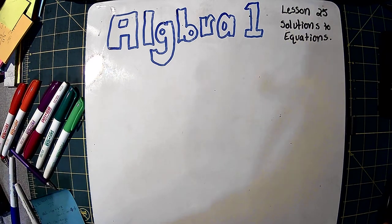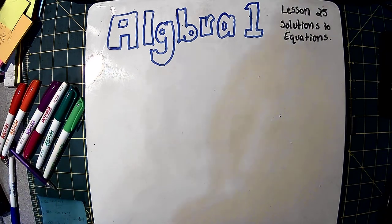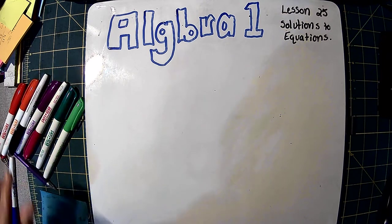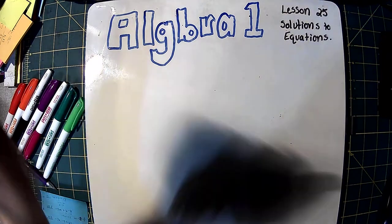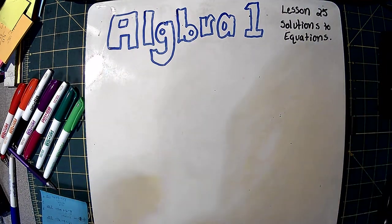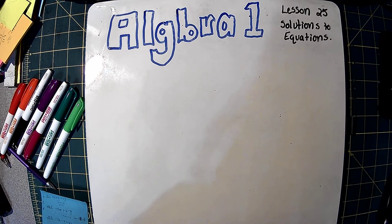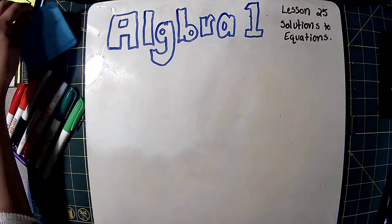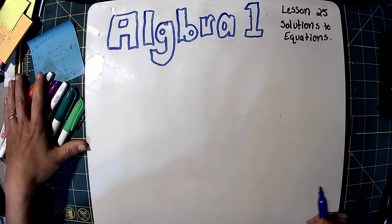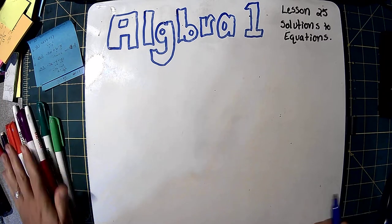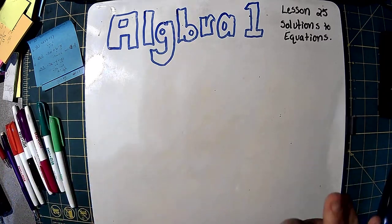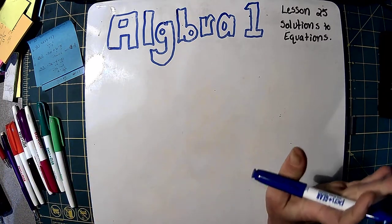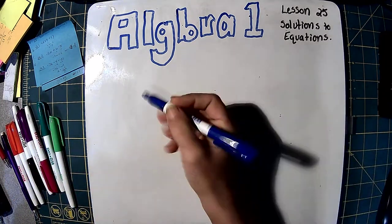Hi, everybody. This is Algebra 1, Lesson 25, and we're going to be going over solutions to equations. We already learned this a little bit last lesson in class. We're just going to be putting together the two things that we already did.